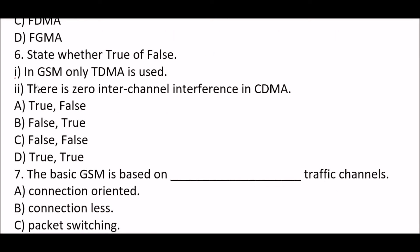State whether true or false. First statement: in GSM, only TDMA is used. Second statement: there is zero inter-channel interference in CDMA. Option A: true, false. Option B: false, true. Option C: false, false. Option D: true, true. The right answer is Option C, false and false. The statement that only TDMA is used in GSM is false, and the statement that there is zero inter-channel interference in CDMA is also false.